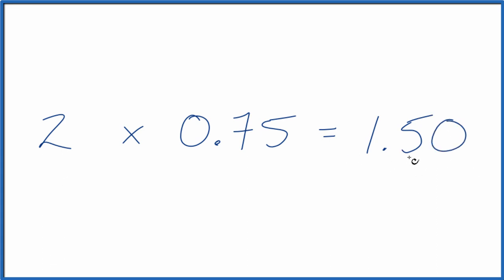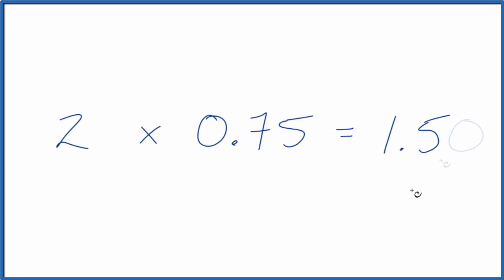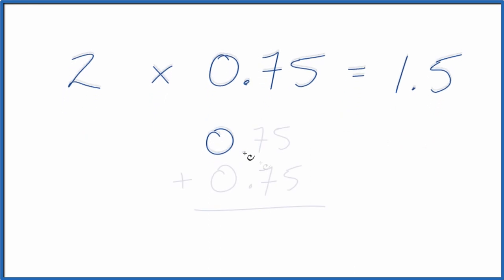And you could call that 1.5 as well. The other way to think about this is you have 2 of these, so 2 of the 0.75s, and you could just add them together.